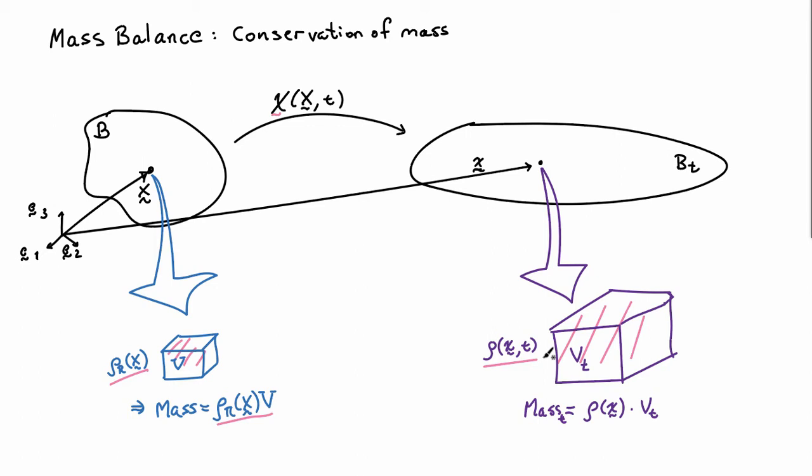And the mass of this chunk of material at time T is going to be the density ρ times that volume VT. Now, we know from before that the volume stretch is given by the Jacobian determinant of the deformation gradient, so J. So, VT is equal to J times V. The other thing that we know is that we're looking at the same set of material points. So, the mass that I start with is going to be equal to the mass that I finish with. So, this is what I would call global mass conservation. It's something that you can observe in the laboratory.